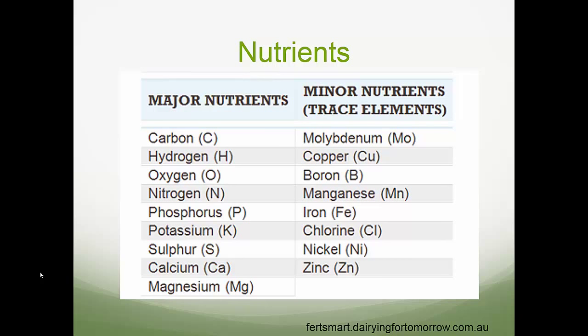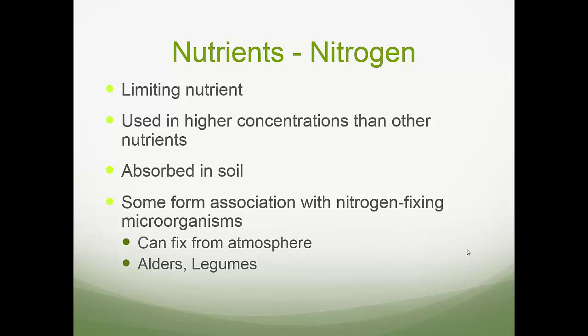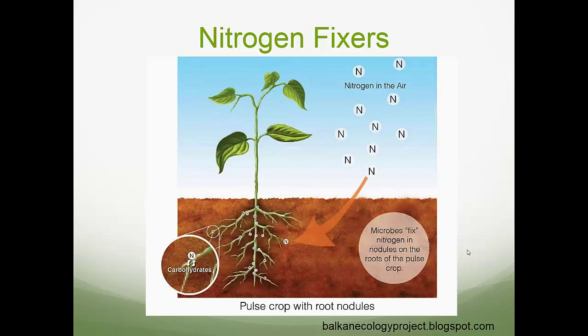Focusing on nitrogen — it's often considered a limiting nutrient. It's used in higher concentrations than other nutrients and is often absorbed from soils. Some plants have the ability to form associations with nitrogen-fixing microorganisms and can fix nitrogen from the atmosphere. Examples include alders and legumes. Microbes fix nitrogen in nodules on the roots of the plant, giving those plants an advantage.